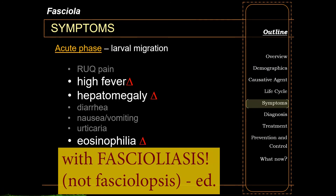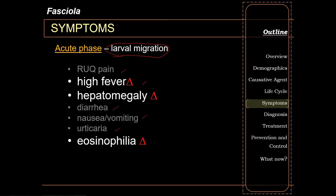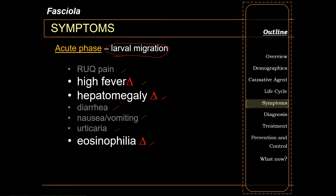Symptoms of fascioliasis should be categorized into two major phases. The acute phase revolves around larval migration. Due to the invasive nature of the larva, it elicits a high degree of immunologic response, resulting in vague abdominal pain, fever, diarrhea, nausea, vomiting, and eosinophilia. Due to rampant migration inside the liver parenchyma, it eventually leads to hepatomegaly. High fever, hepatomegaly, and eosinophilia are considered the triad of diagnostic significance in fascioliasis.